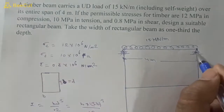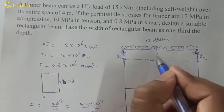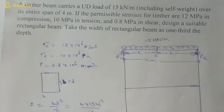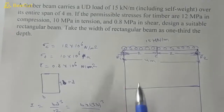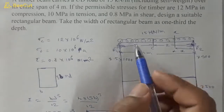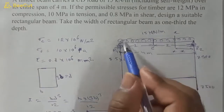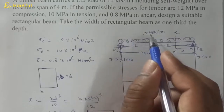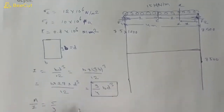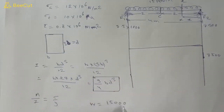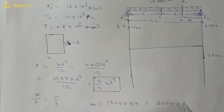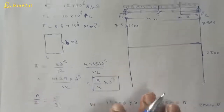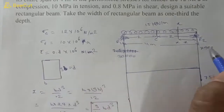For the simply supported beam, by symmetry R1 equals R2. The total load is 15,000 × 4 = 60,000 N, so R1 = R2 = 60,000 / 2 = 30,000 N. The midspan point C is at 2 meters from each support.